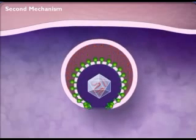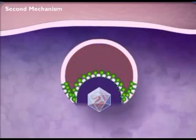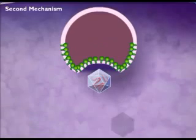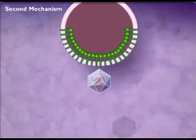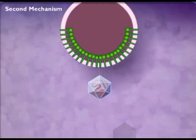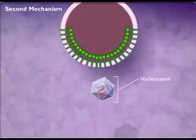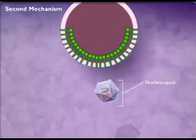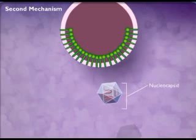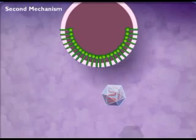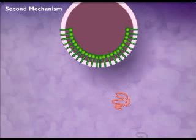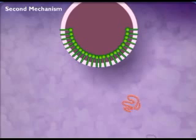The envelope of the virion then fuses with the plasma membrane of the vesicle, and the nucleocapsid is released into the host's cytoplasm. The capsid protein is then removed, releasing the nucleic acid of the virus.